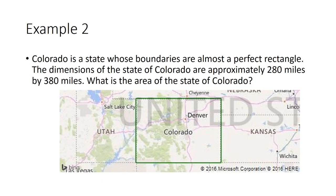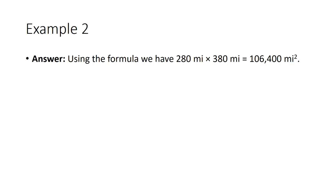A second example involves the state of Colorado, whose boundaries are almost a perfect rectangle. The dimensions are approximately 280 miles by 380 miles. Multiplying these together gives an area of 106,400 square miles.